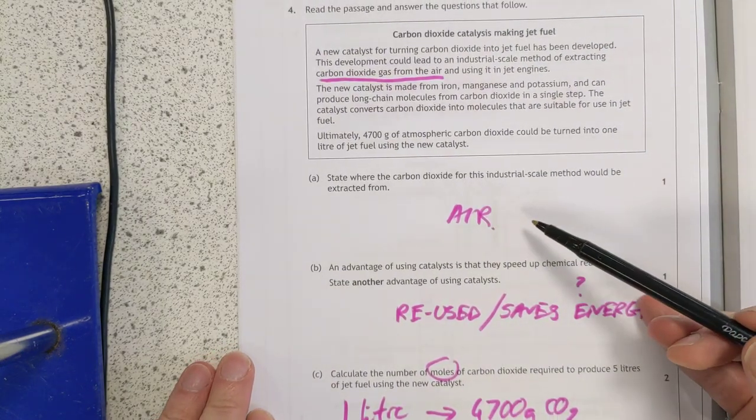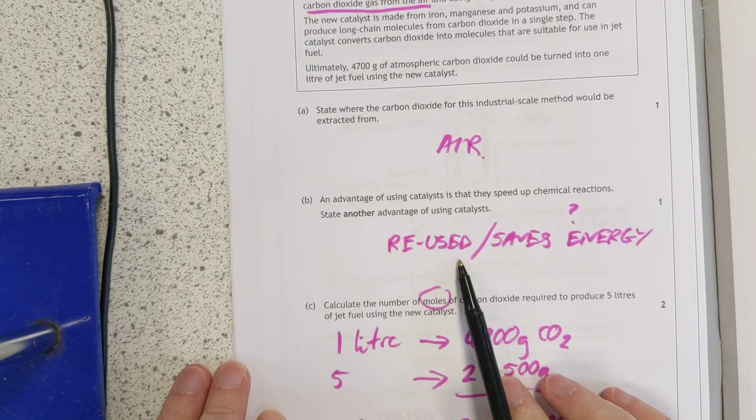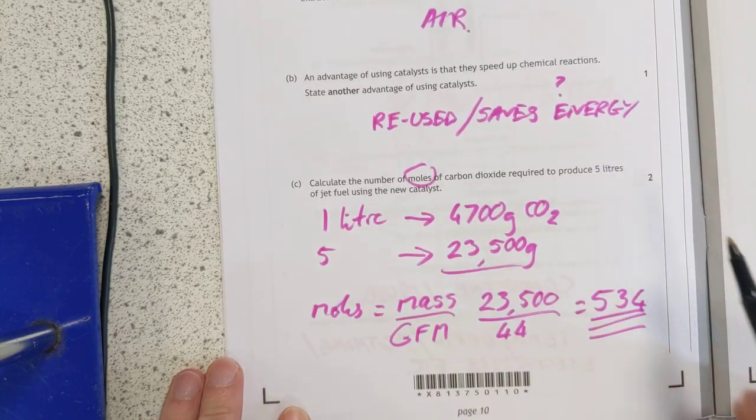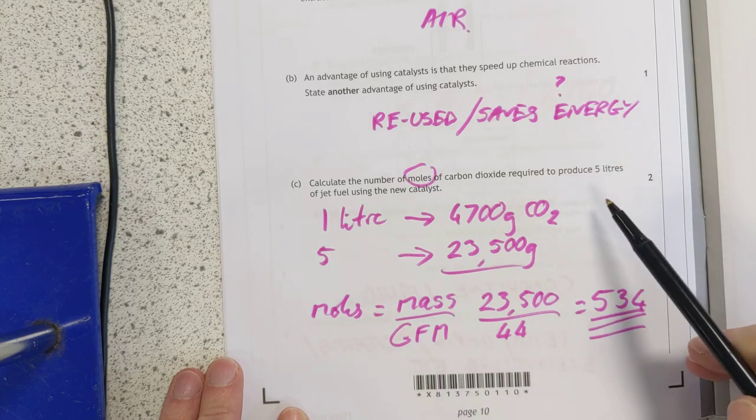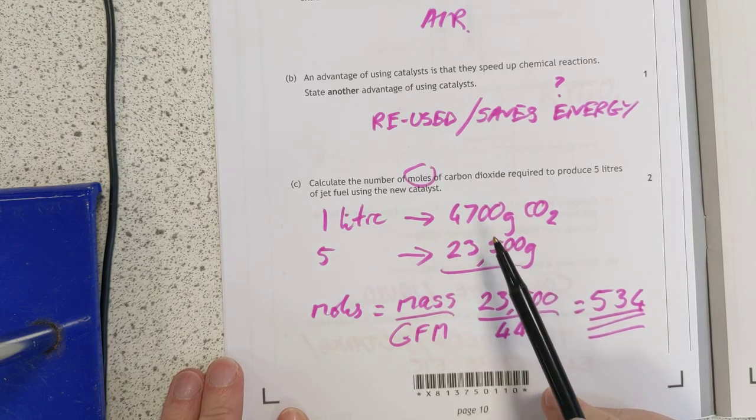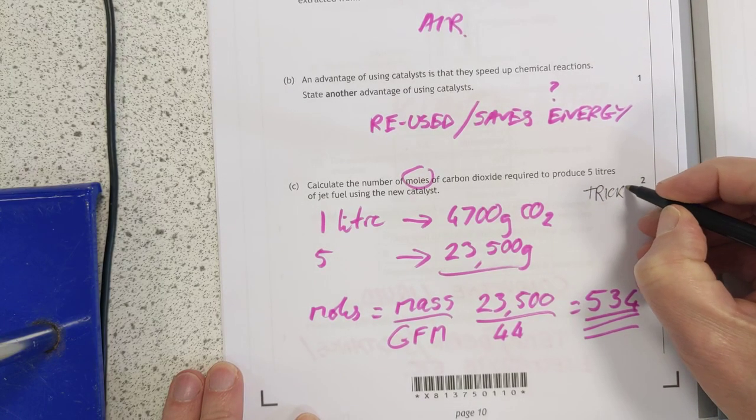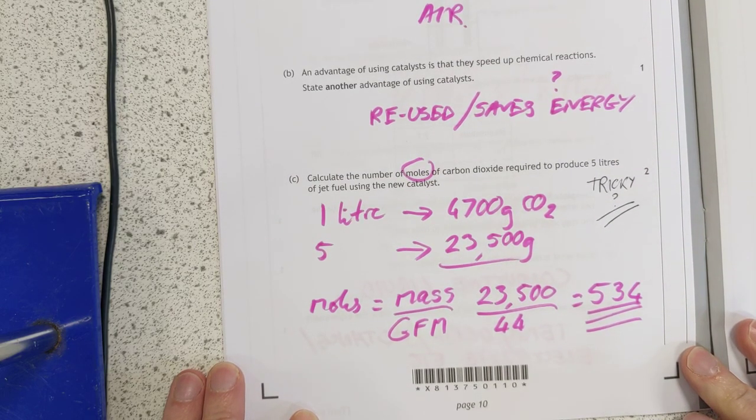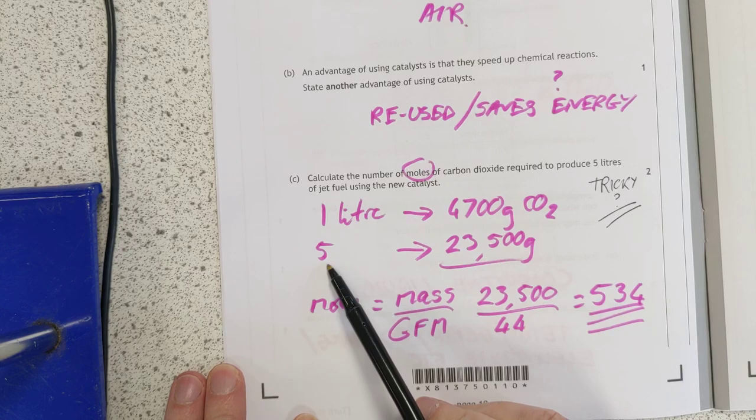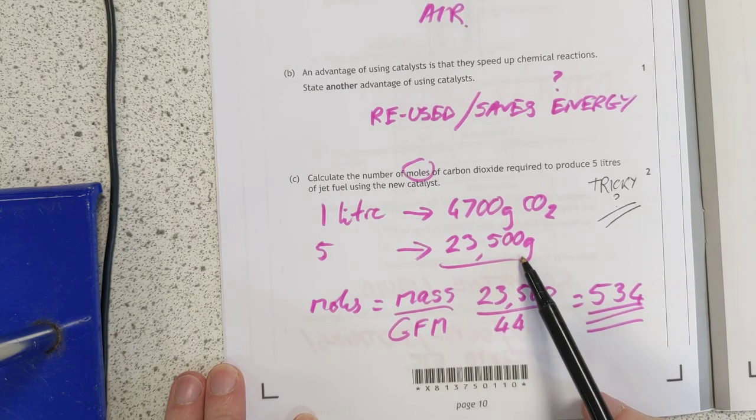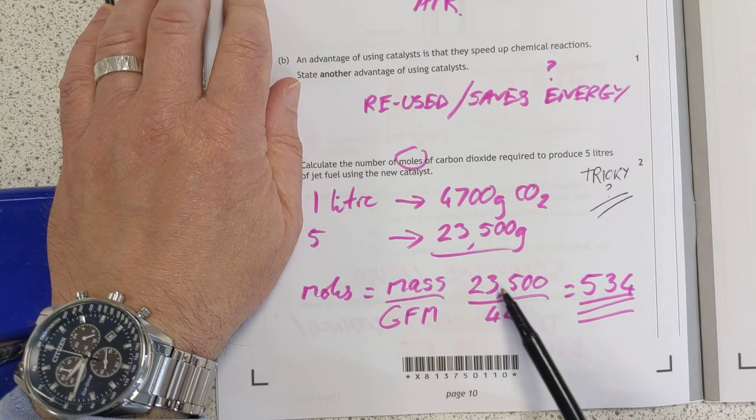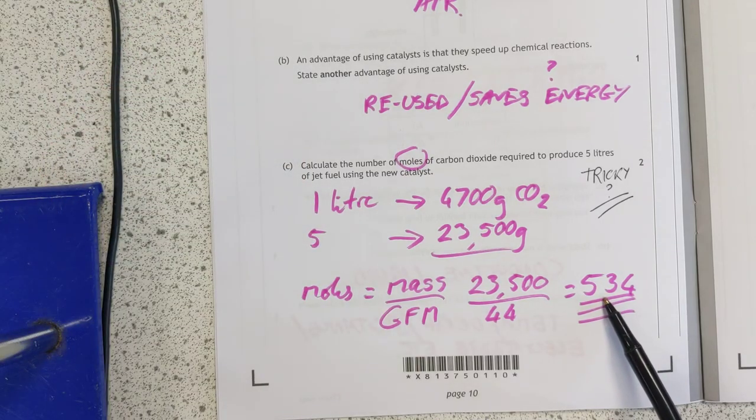Close reading question. I reckon the answer is air for that one. Catalysts can be reused, or this saves energy. Therefore, it makes things cheaper. I'm not sure what the SQA will accept there. Probably something along these lines. Number of moles of carbon dioxide used to make 5 litres of jet fuel. Well, 1 litre of jet fuel requires 4,700 grams. This might be a tricky question because the numbers are just very big. But it is logical. It's quite a good question, actually. I like it. I do like it. It just might put some people off because we're not used to dealing with 4,700 grams of something. So, 5 litres of jet fuel will therefore require 23,500 grams. And then all we need to do is turn the 23,500 grams into a number of moles. So, moles is mass divided by GFM. So, that's 23,500 grams divided by 44. 534 moles for that one.